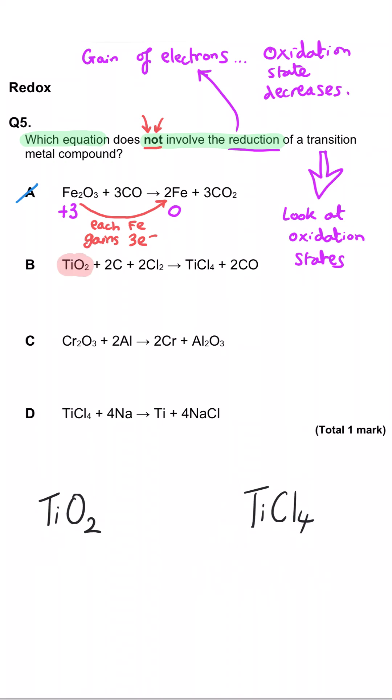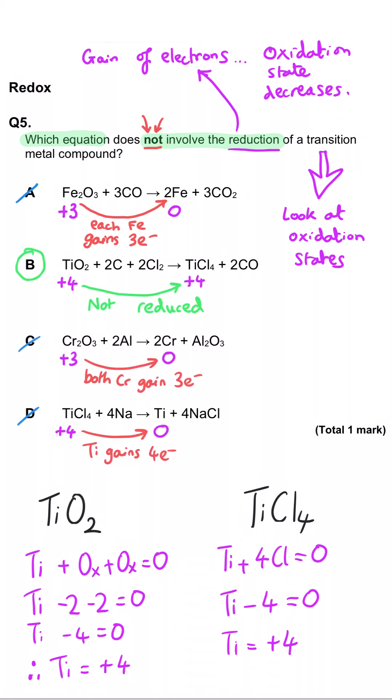In B, titanium oxide, two oxygen is minus two times two, so that's minus four. Titanium thus must be plus four at the beginning. In titanium chloride, you've got four lots of minus one for the four chlorines. And so titanium must be plus four to cancel that out. So titanium is the same at the beginning as at the end. So it has not been reduced.